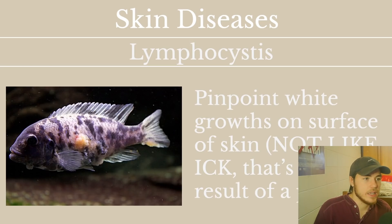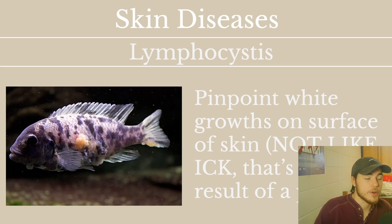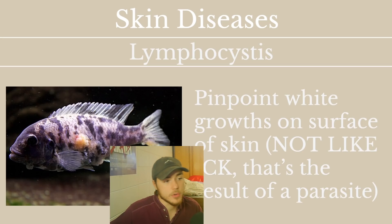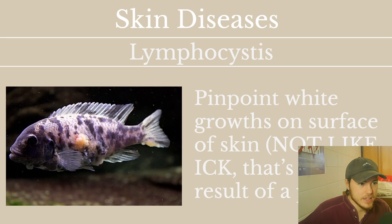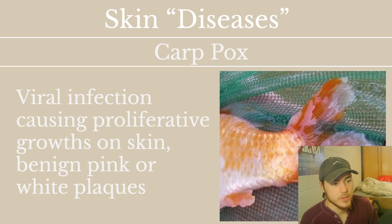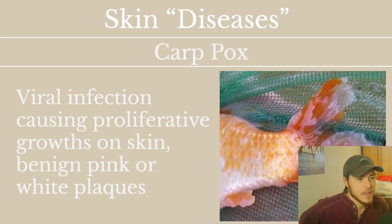Lymphocystis consists of pinpoint white growths on the surface of the skin — not in large clusters or on a line, but in specific spots. It's important not to confuse lymphocystis with Ich. Ich is the result of a parasite on the fish, whereas lymphocystis is the result of growths. Finally, carp pox is an example of a viral infection in carp that results in proliferative growths on the skin — the skin growing outwards in white or pink benign plaques that are not cancerous.